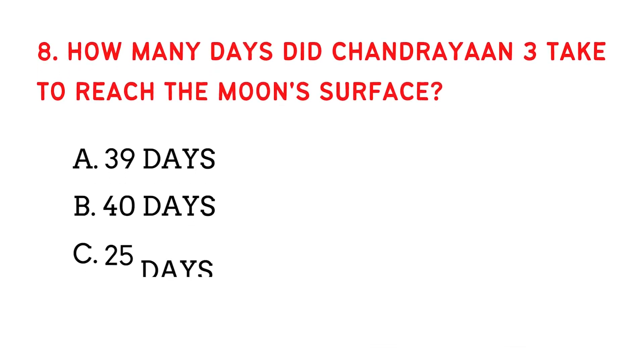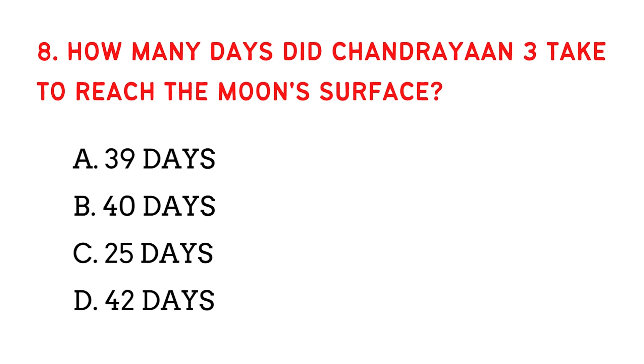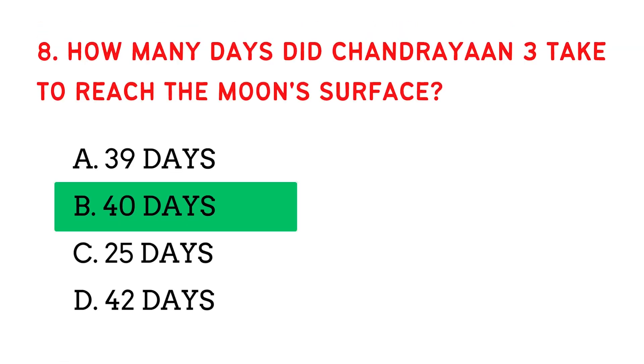How many days did Chandrayaan 3 take to reach the moon's surface? The answer is 40 days.